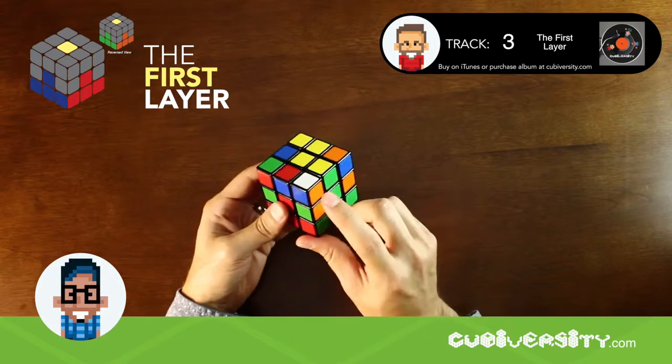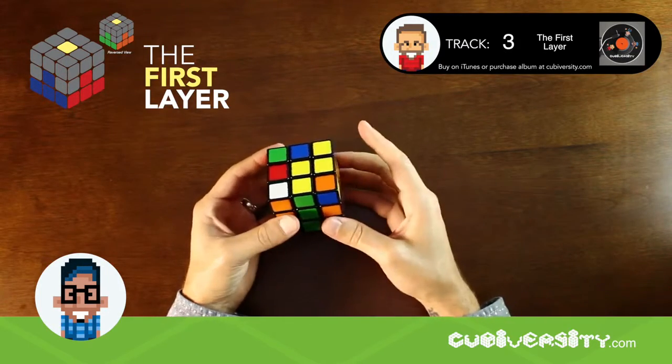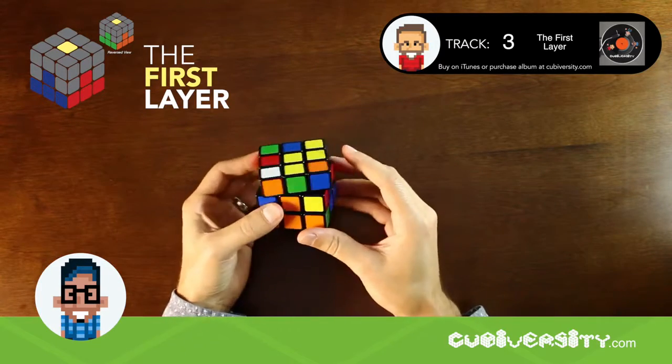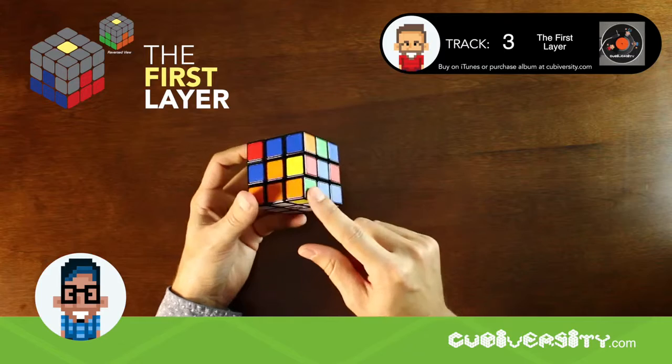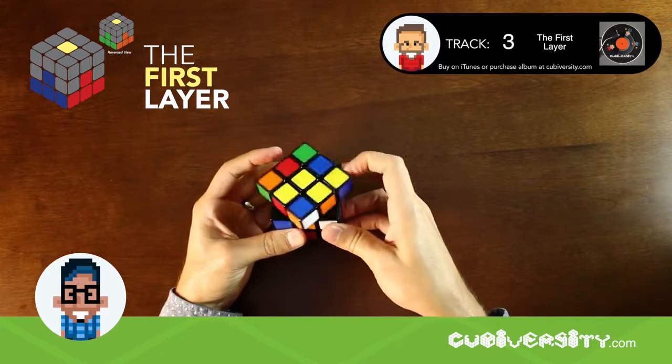Finally, the last piece has the white sticker facing upward. Position the cubie over the corner where it will end up and perform R, U2, R prime.